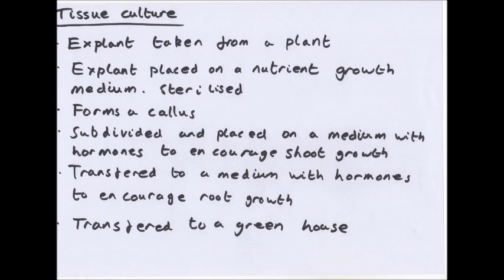After a few weeks, single cells from the callus are removed and subdivided, then placed on a medium with hormones to encourage shoot growth. After a further few weeks, the shoots are transferred onto a different growth medium containing hormones which encourage root growth. Once roots have developed, the growing plants are transferred to a greenhouse to be acclimatised and grown further before being planted outside.